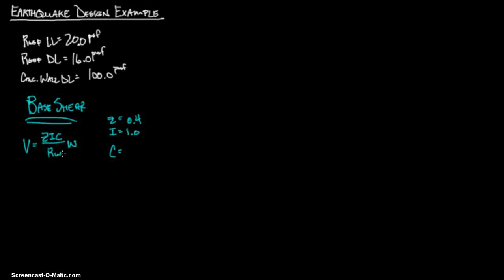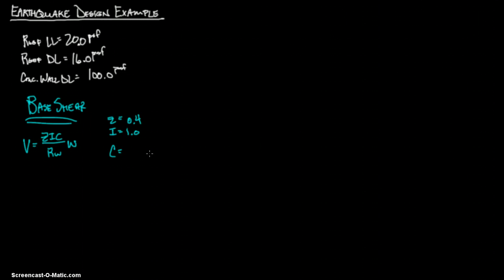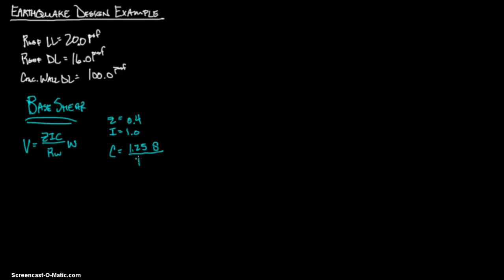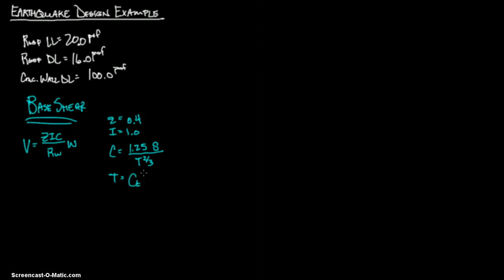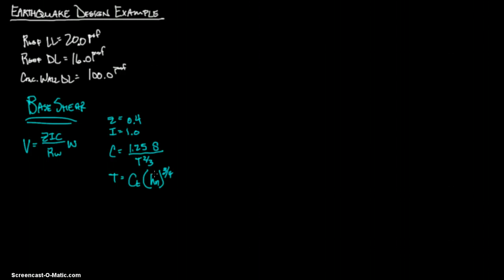For C, you can use a minimum C over Rw, or go ahead and calculate it. C equals 1.25S over T to the 2/3 power, where T is your period. And T equals CT times HN to the 3/4 power. CT can be found from a table on page 83.